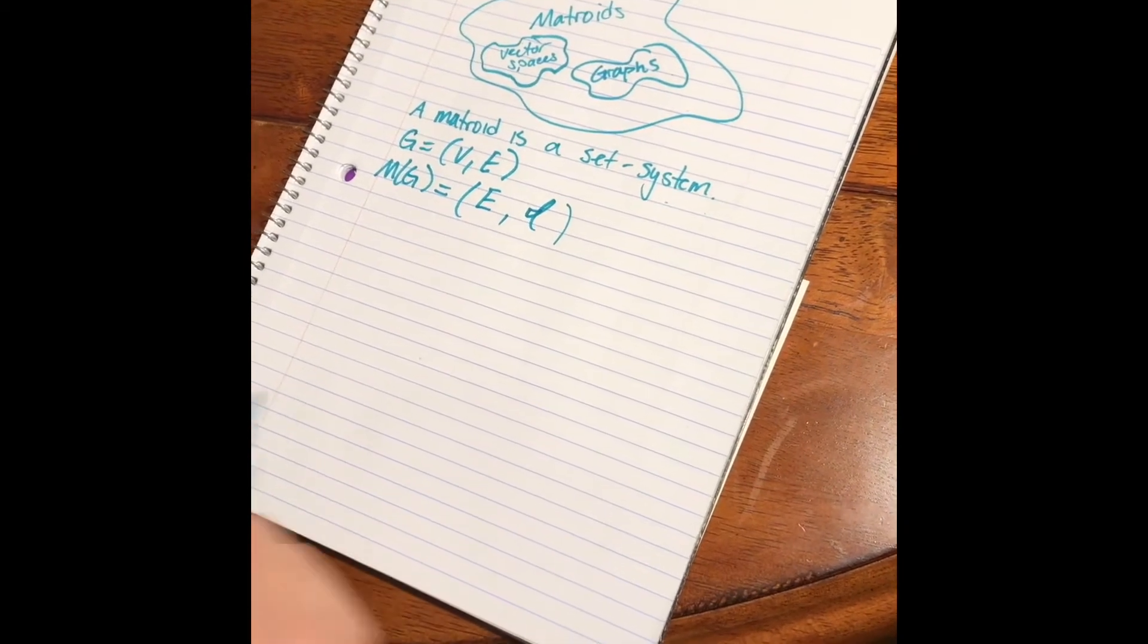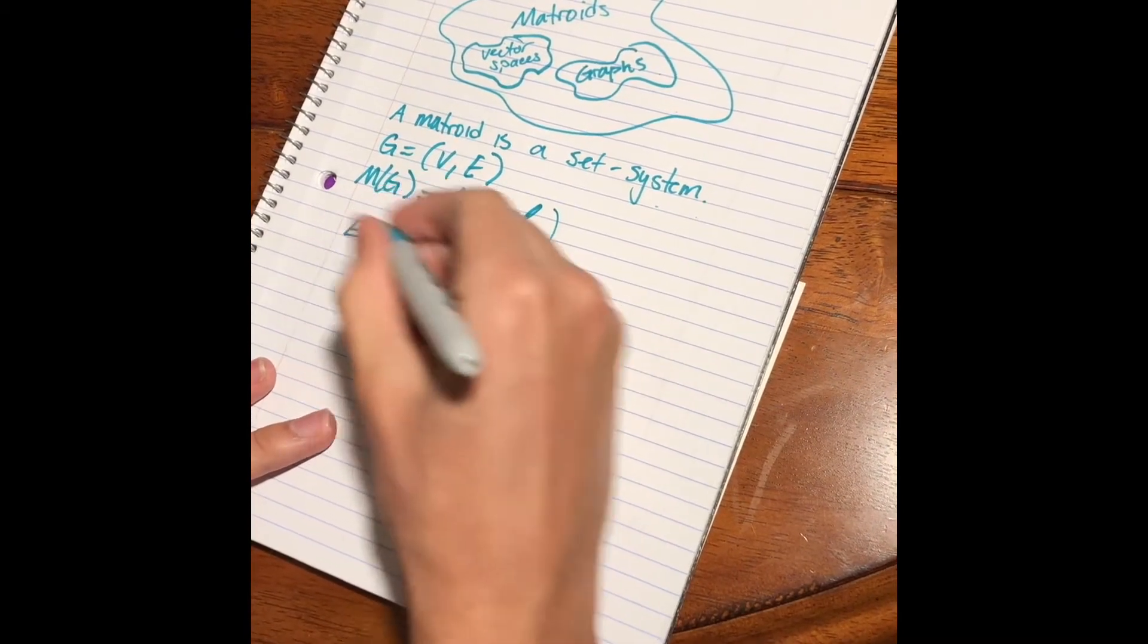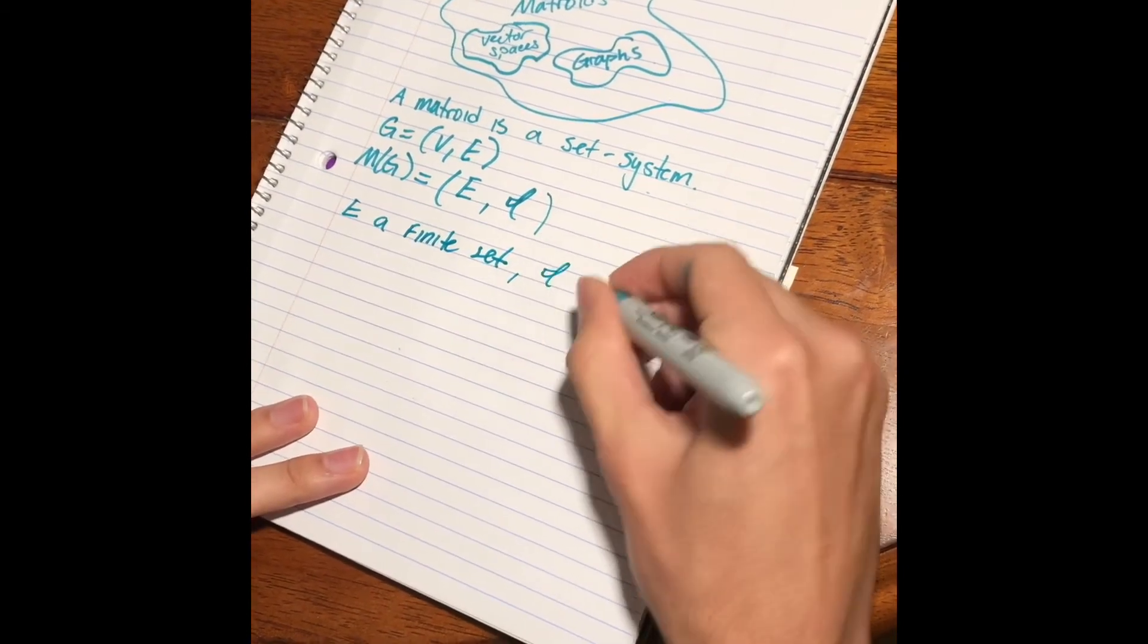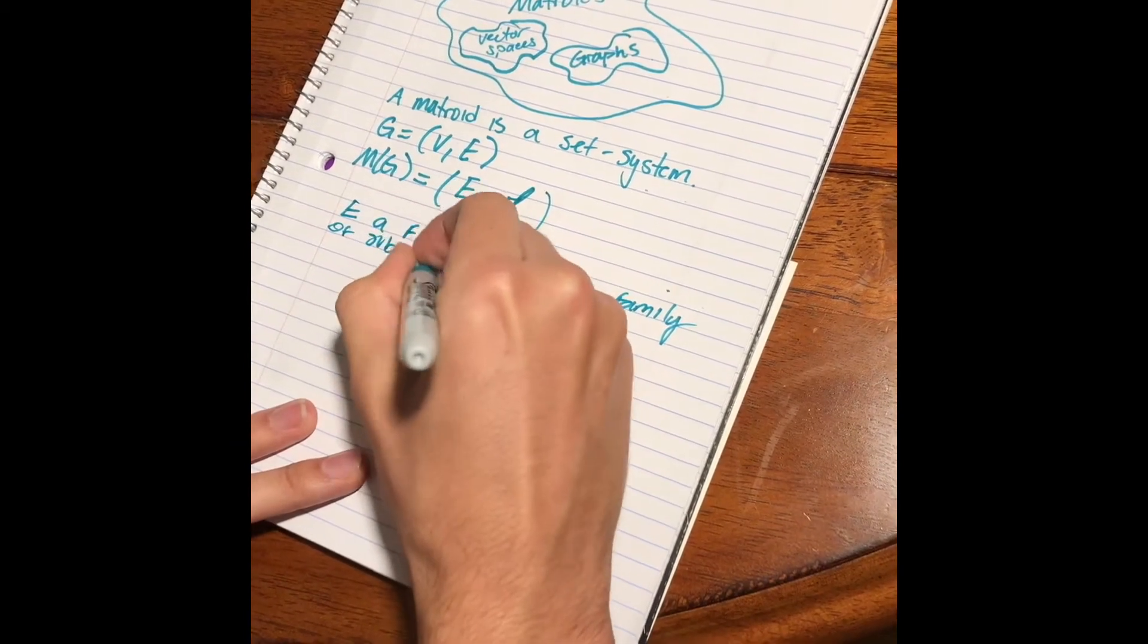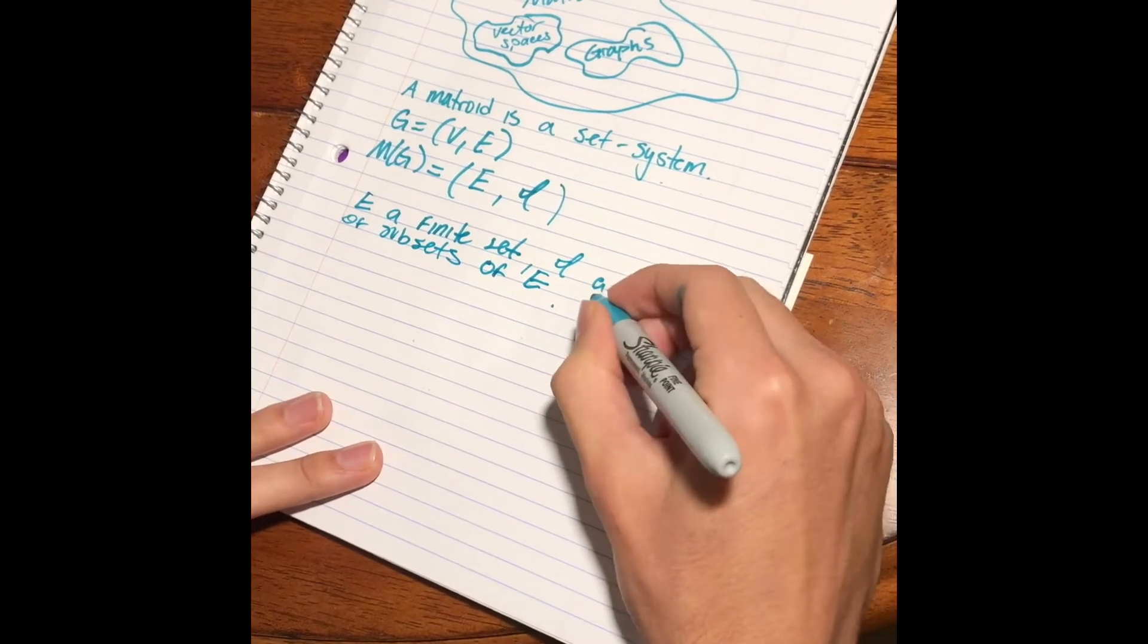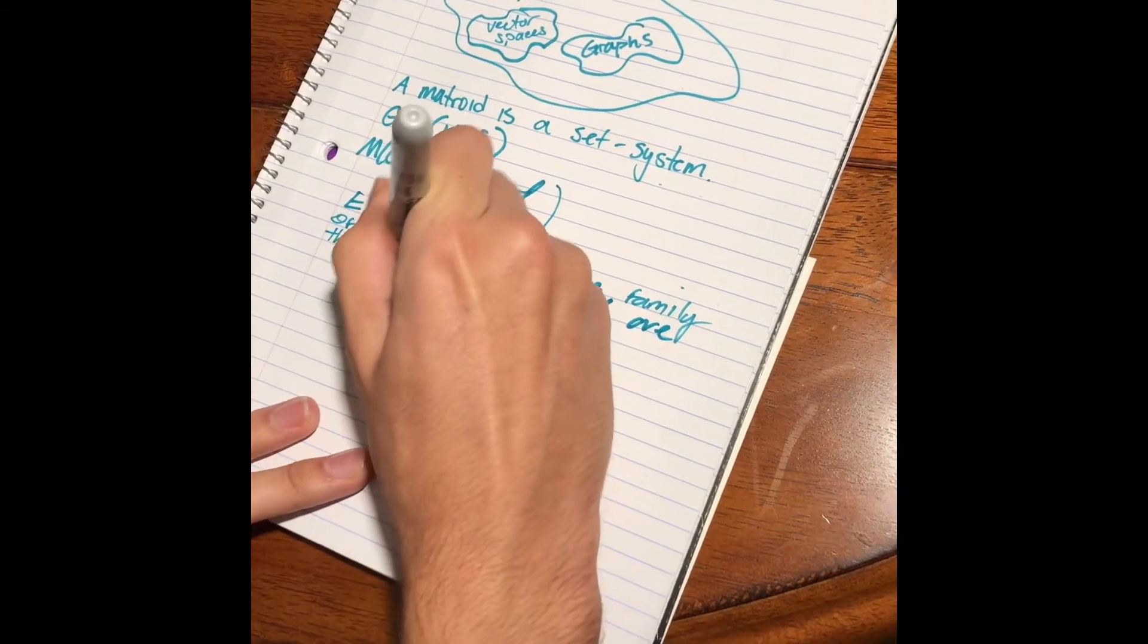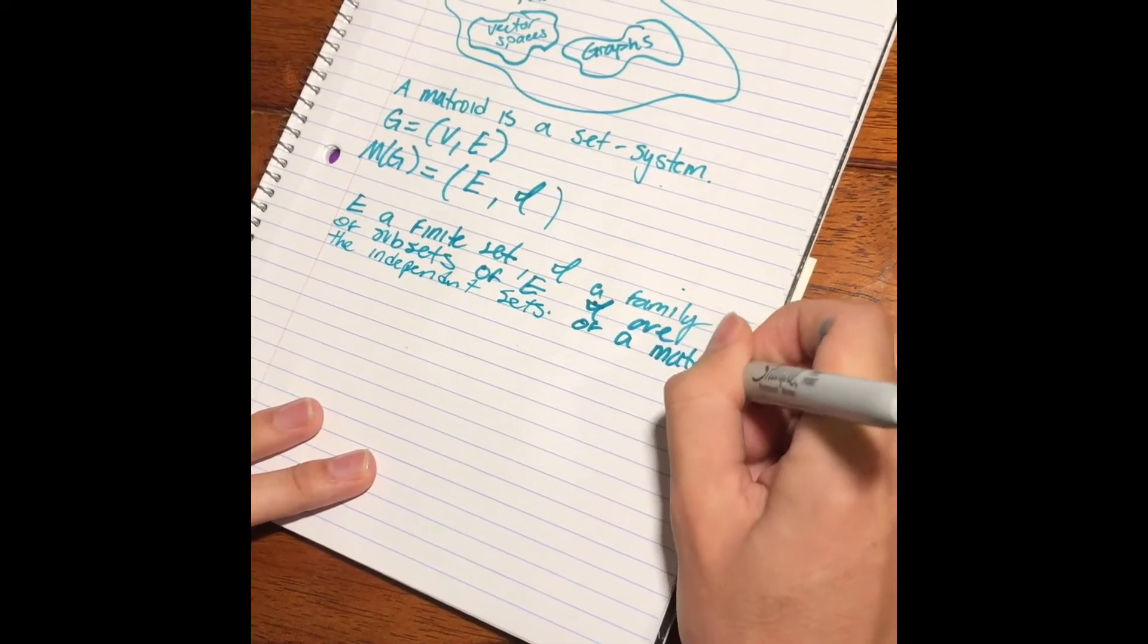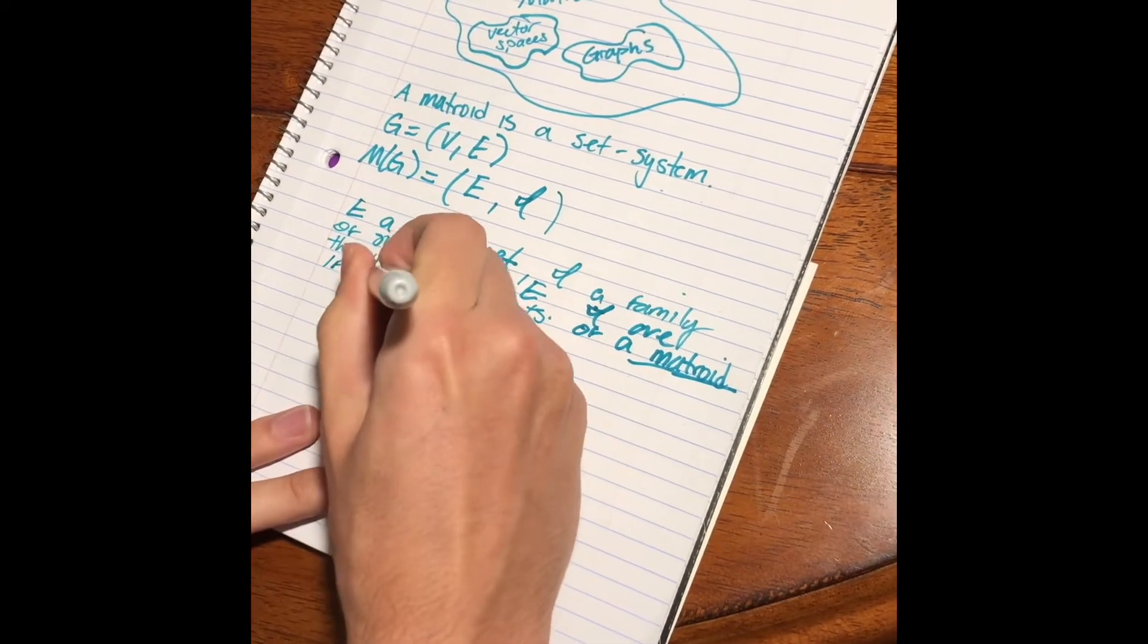The formal definition of a Matroid is that E, a finite set, and I, a family of subsets of E. We say that E are the independent sets of a Matroid if the following hold.